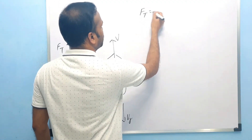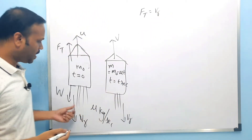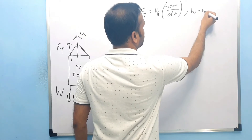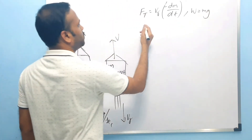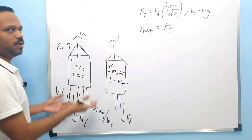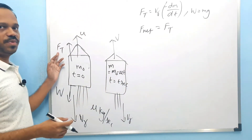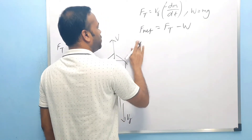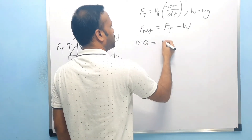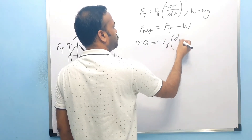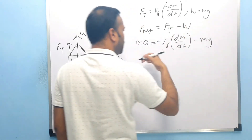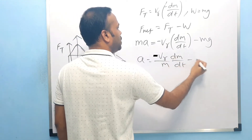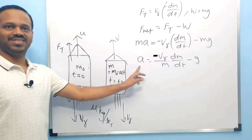So from the thrust force equation, we have: VR·(−dm/dt) − Mg = M·a. Dividing by M gives the acceleration of the rocket at any time t: a = VR·(1/M)·(−dm/dt) − g.